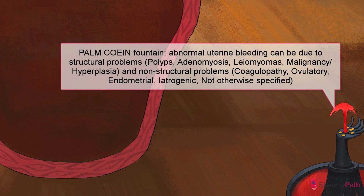These are the disorders that will be highlighted in this video, as well as endometriosis, which causes pain instead of bleeding. But first, a brief aside concerning the non-structural causes of abnormal uterine bleeding — these are the COIN part of the acronym: Coagulopathy, Ovulatory dysfunction, Endometrial, Iatrogenic, and Not otherwise specified.